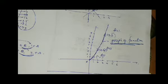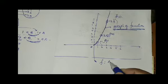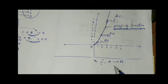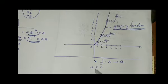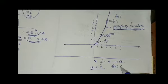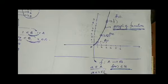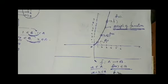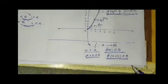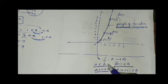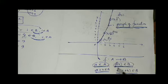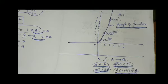Let f be any function from A to B. If a belongs to set A, then f(a) belongs to set B. Similarly, if a+h belongs to set A, then f(a+h) belongs to set B. So for any element a in A, its image is f(a), and for element a+h in A, its image is f(a+h).